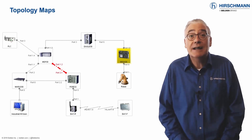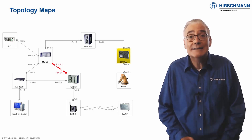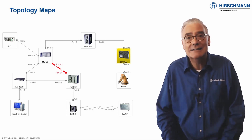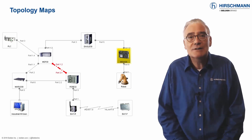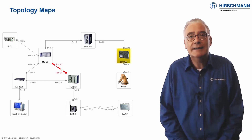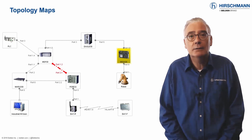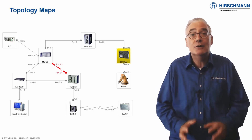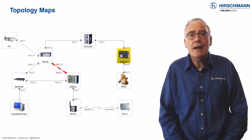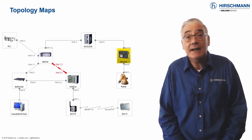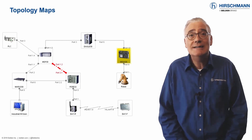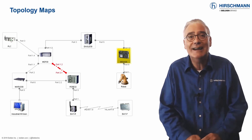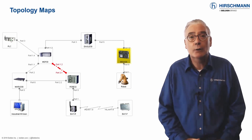Zigzag lines represent wireless connections, and dotted lines are redundant links, so you can see precisely where your data is flowing. All components are color-coded for status. Every element of the display can be customized, which means you can design your screens to provide strictly the information you require.